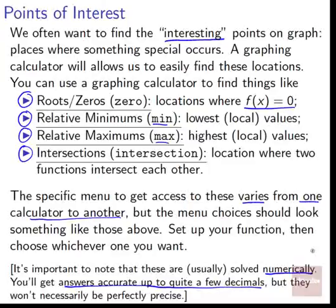It's like the difference between saying pi and saying 3.1415. 3.1415 is a very good approximation of pi, but there's still more precision in the actual number of pi. So the answer that you get from your calculator when you use things for roots, zeros, relative minimums, maximums, intersections, they'll be good answers, but they won't necessarily be perfect answers. They'll be approximations, and that's something you want to keep in mind sometimes.